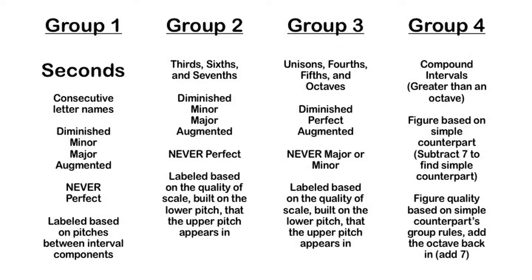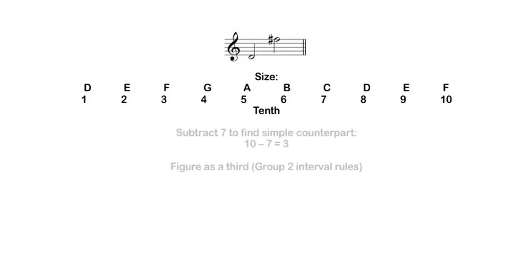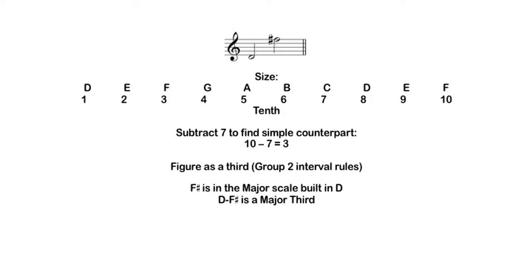Group 4 intervals are compound intervals — any interval wider than an octave. Because musical systems repeat at the octave, it is sometimes easier to figure these based on their simple counterparts. We begin by taking the size of the interval and subtracting 7 from it. For example, D up to F sharp is a tenth. We subtract 7 from 10 and get 3 — the simple counterpart to a tenth is a third. Thirds are Group 2 intervals, so we do our quality check using that rule. F sharp shows up in the major scale built on D, so D to F sharp is a major third, and adding 7 back gives us a major tenth.